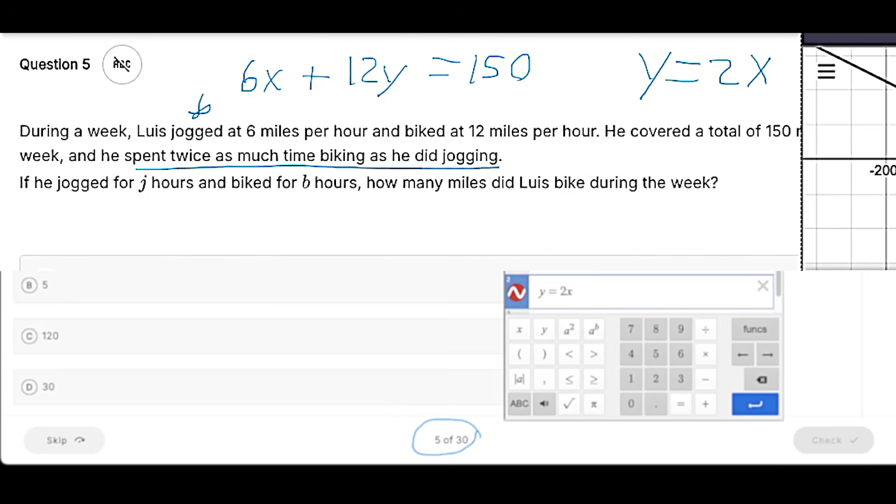Now, remember, we said biking was Y. So we might be thinking, oh, it's 10. But we would be wrong because we have to remember that our original equation here was value plus value equals value.